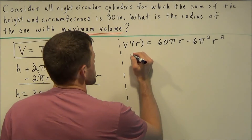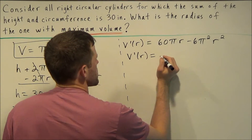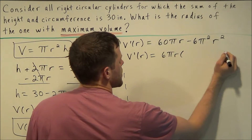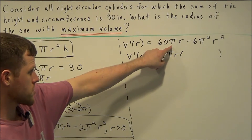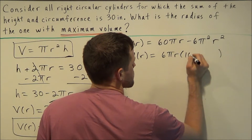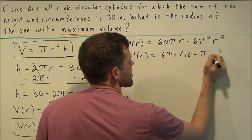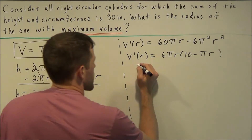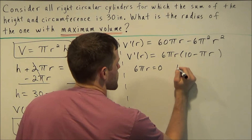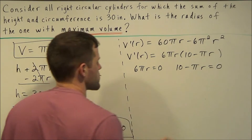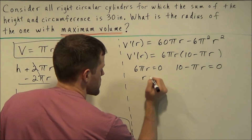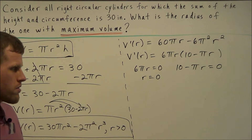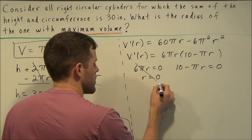We want to find the roots of this derivative, so we set V prime of r equal to zero. First we factor out the greatest common factor, which is 6πr, leaving us with 6πr times (10 minus πr) equals zero. The first factor gives r equals zero, but we reject this because r must be greater than zero — a cylinder with radius zero would be non-existent.